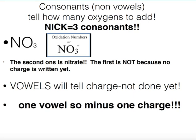If you look at 'Nick' in the mnemonic, starting with N, there are three consonants, so we have O3. There is one vowel, which means a negative one charge. So this is nitrate. You have to see an actual charge on your polyatomic ion, or it has to be paired with a metal, in order to be a polyatomic ion. Otherwise it's a covalent or molecular compound, which we'll discuss later.